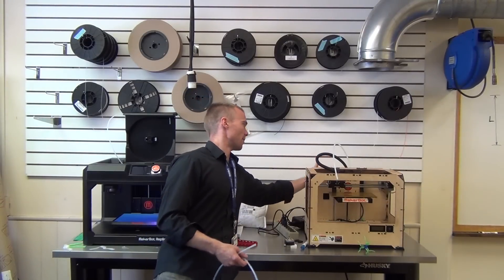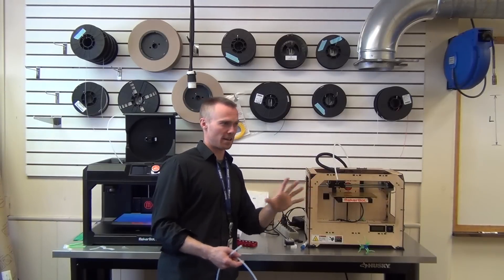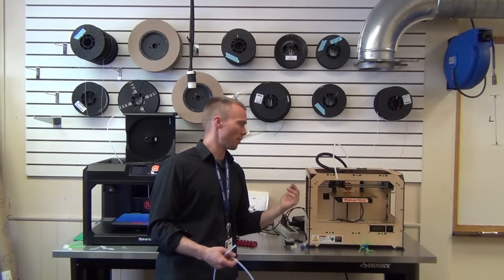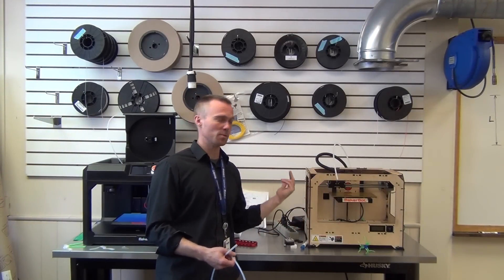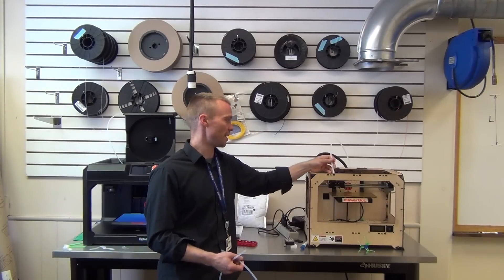The filament spool is mounted kind of offset, just a little bit lower, so the filament comes off the spool, feeds up to the guide tube, and down to the print head.